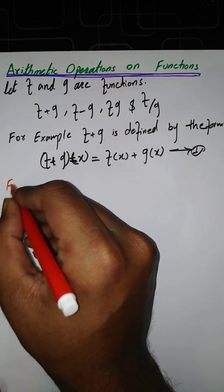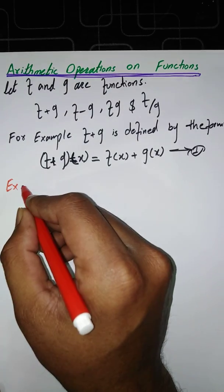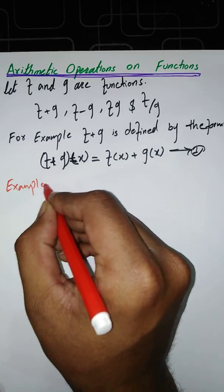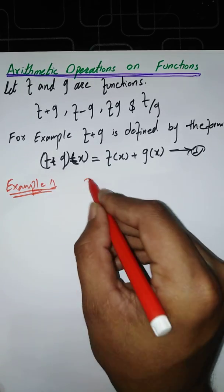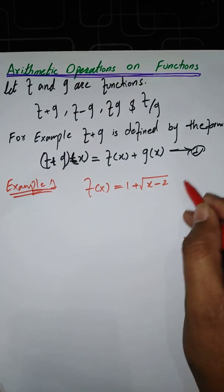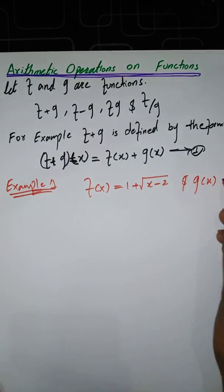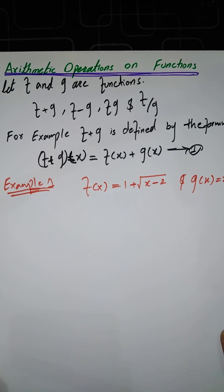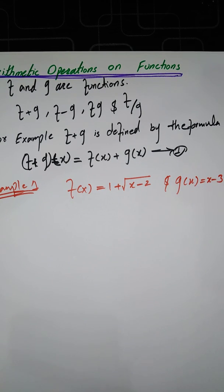Now let's look at example one from our book. Suppose we have F of x equals 1 plus square root of (x minus 2), and G of x equals x minus 3. You can add them, subtract them, divide them, and multiply them. First, let's find F of x plus G of x.